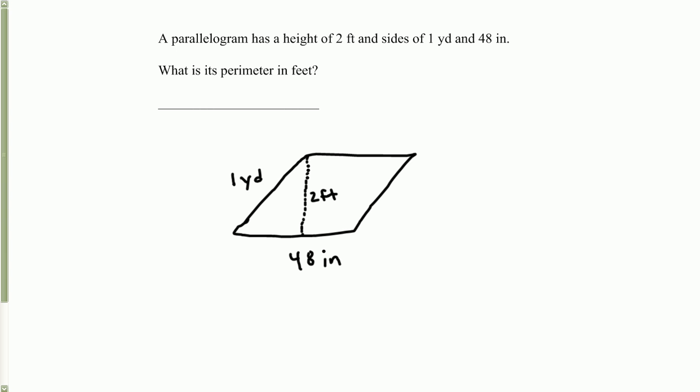Okay, now we need to find the perimeter in feet, so we've got to convert the sides into feet. And we find perimeter again - perimeter is the distance around this object, so height of 2 feet is really not an issue here because we're just finding perimeter. But we do need to change the yards and the inches into feet.